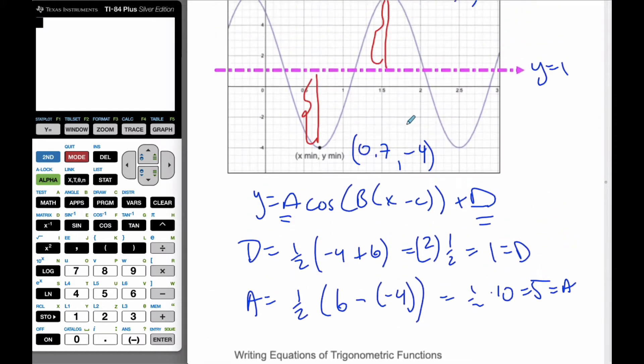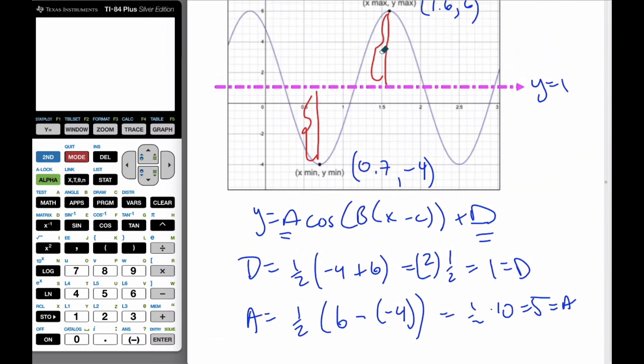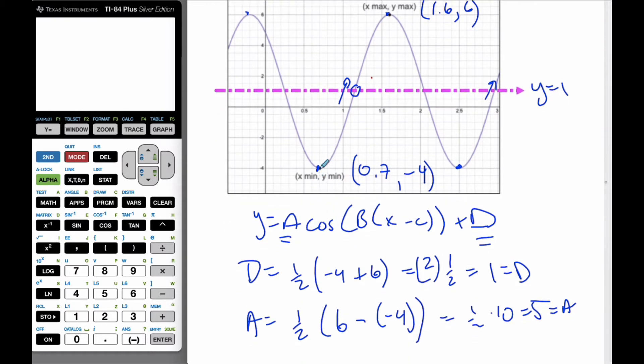Then I need to go to my period, my b value is 360 divided by the period. And so in order to find my period, what I have to do, I have to look at either, I could go from a minimum to a minimum, I could go from a maximum to a maximum, I could go from a going upwards, to another going upwards, because these are all the same distance. And so the easiest, I often find the peaks, the valleys, the easiest ones to find.